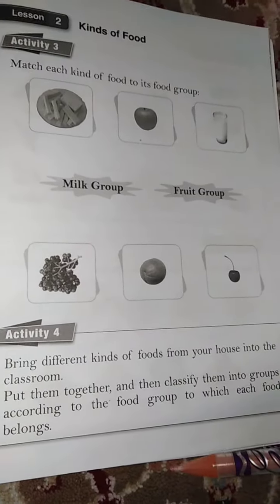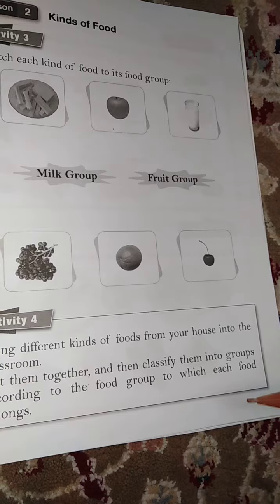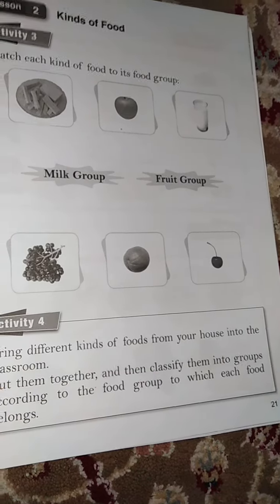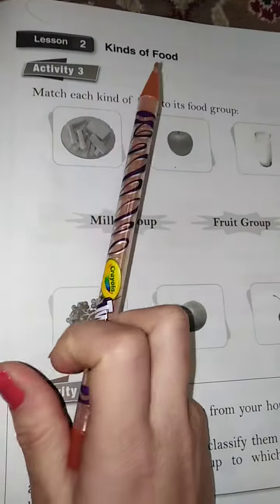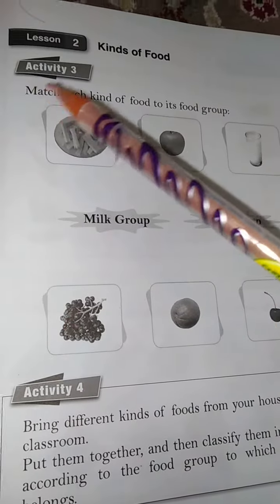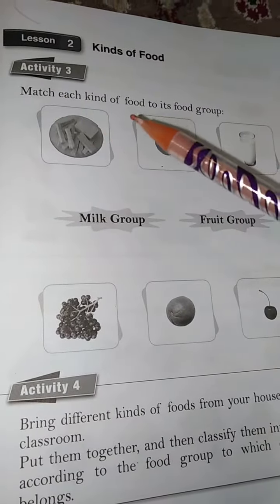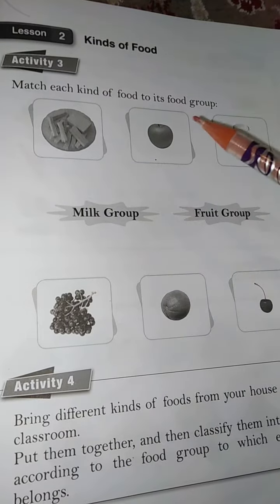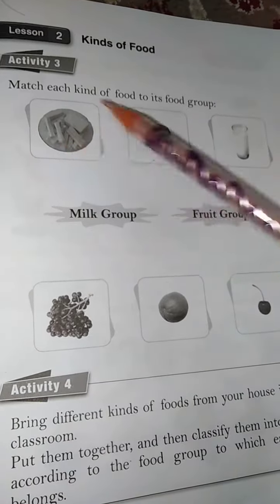Take out your activity book and open it to page 21. Listen to kinds of food. Okay, Activity 3: Match each kind of food to its food group. Here we go.